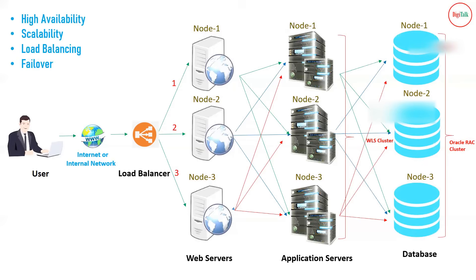This covers the concepts of high availability, scalability, load balancing, and failover. One benefit of the load balancer discussed in architecture part one is SSL termination: instead of configuring SSL at the web server or application server level, you configure the SSL certificate at the entry point — the load balancer. This means you don't need to configure SSL for web servers or application servers, as it is terminated at the load balancer level. All internal traffic is non-SSL, while the entry point remains SSL.